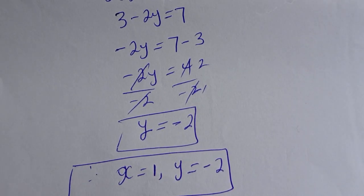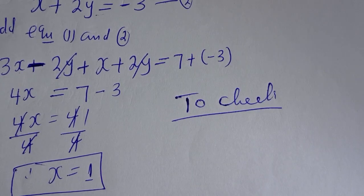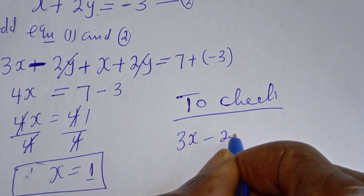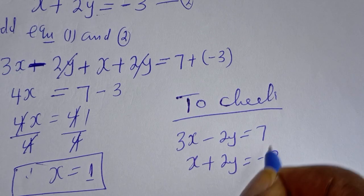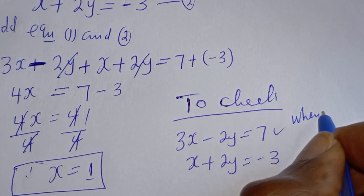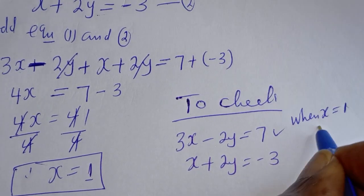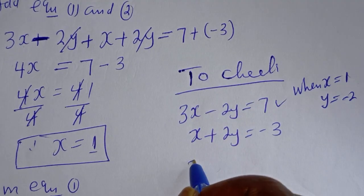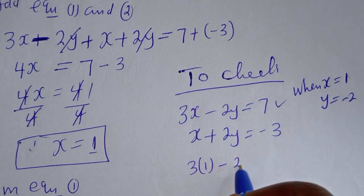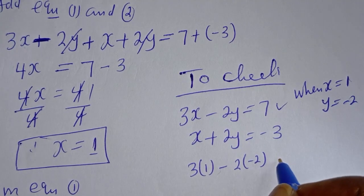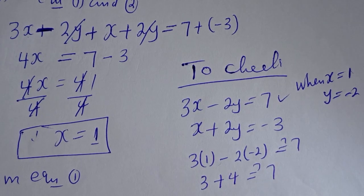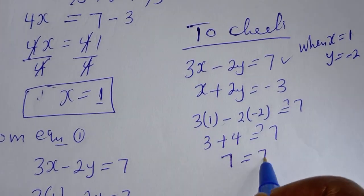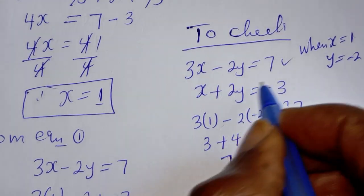Let's check to confirm whether our answers are right. We have the given equations: 3x minus 2y is equal to 7, and x plus 2y is equal to minus 3. When x is equal to 1 and y is equal to minus 2: 3 bracket 1 minus 2 bracket minus 2 — this is 3 plus 4 — must equal 7. And 3 plus 4 is 7, which is true.